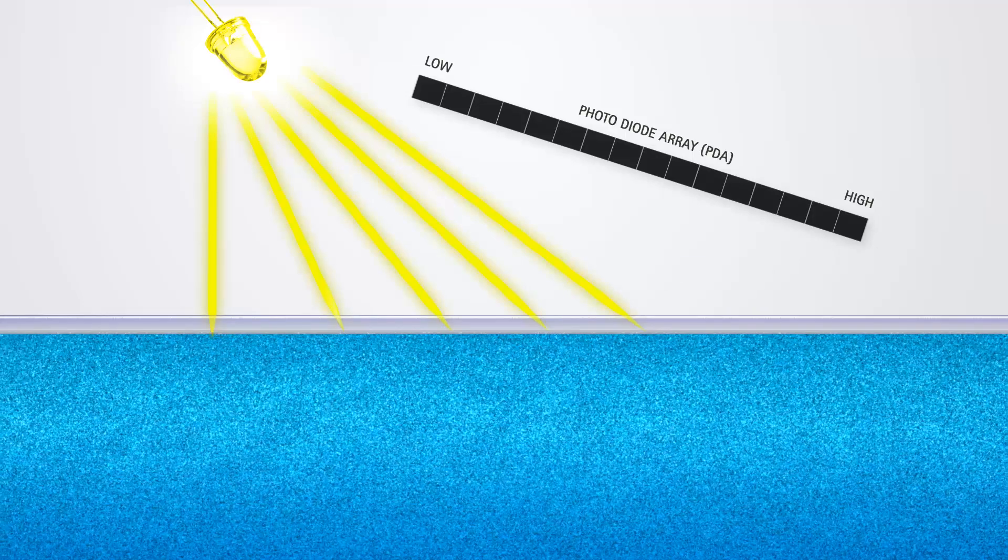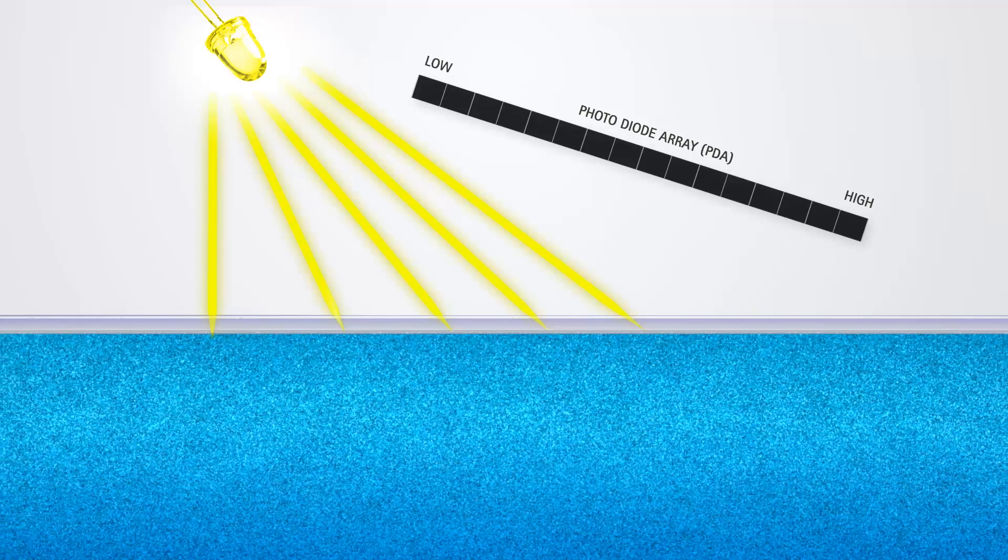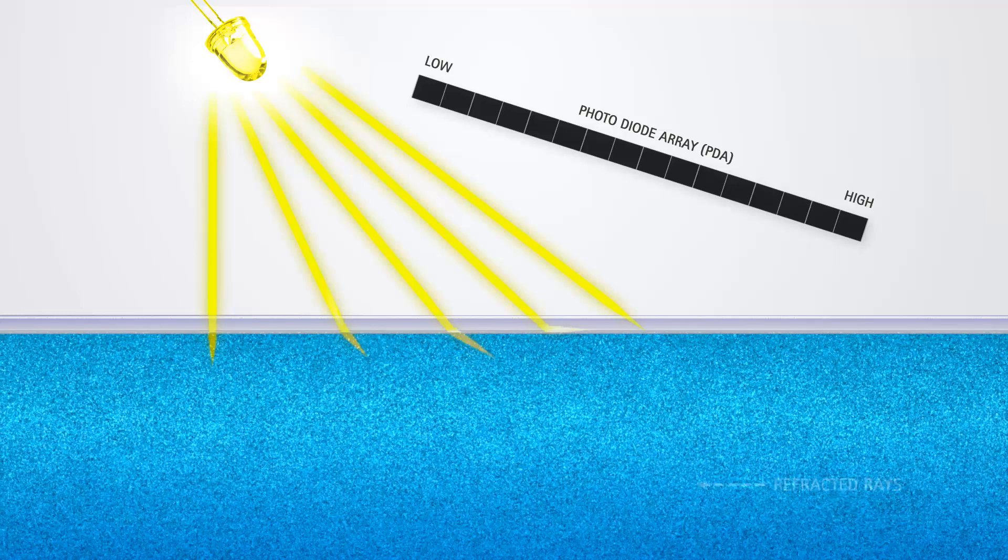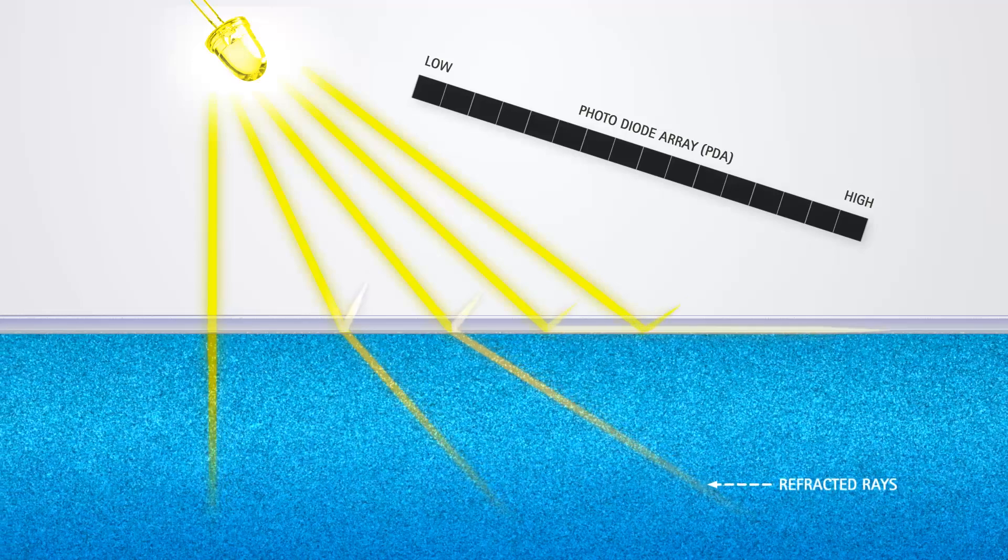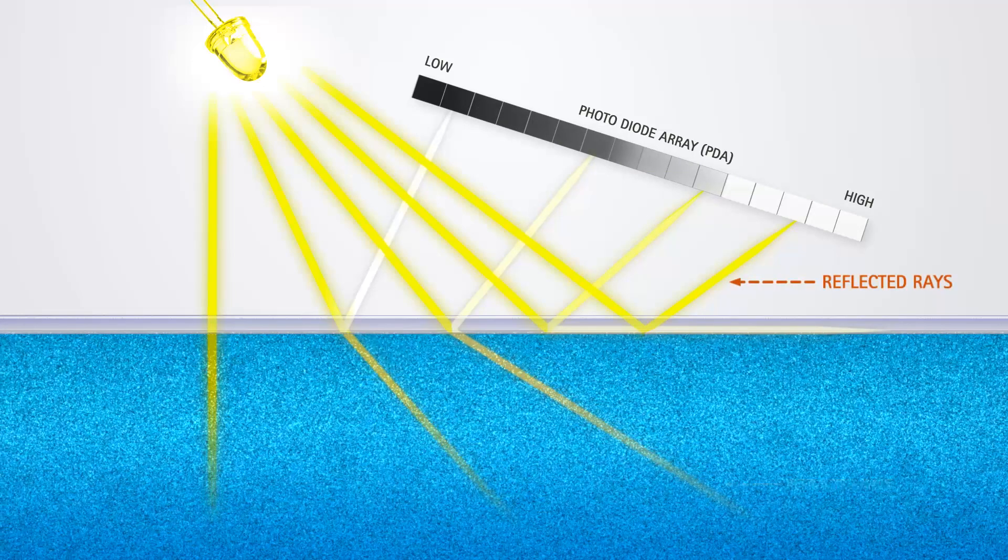When the light from the LED hits the interface between the optical window and the fluid, some of the light is refracted into the fluid and some of the light is reflected back to the photodiode array, or PDA detector.